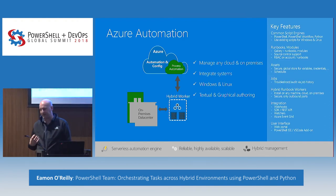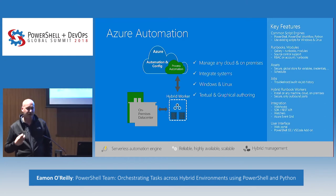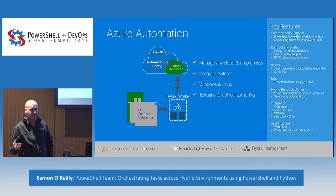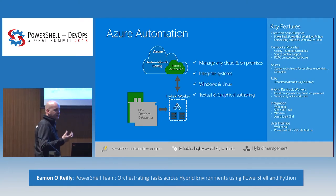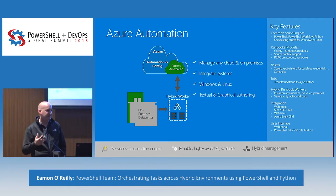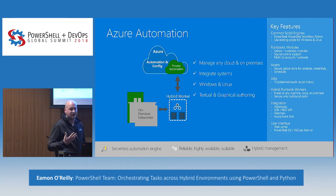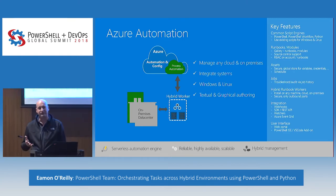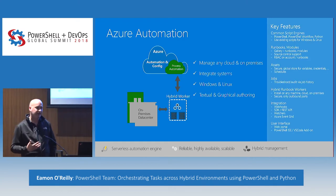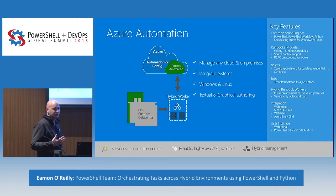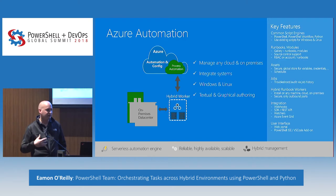We also wanted to make sure we had the exact same capabilities against Windows and against Linux. That's another trend we've seen — customers aren't just in a Windows world anymore. They're getting into a hybrid world where they have Linux and Windows in their environments. We wanted a single automation platform that can integrate and automate all those different tasks. We made Linux first class in the service as well as languages like Python. And obviously PowerShell Core now works on Linux, so you can also take advantage of PowerShell Core if you need to run it on a Linux environment.